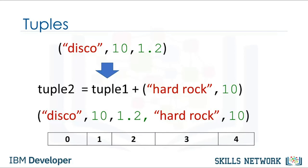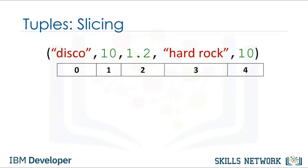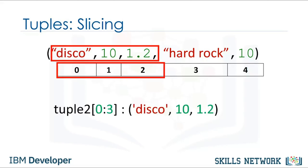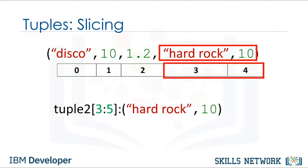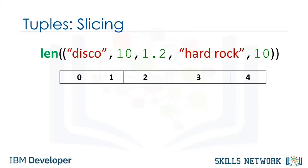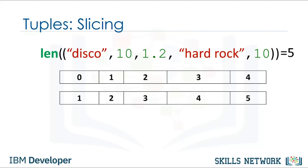We can concatenate or combine tuples by adding them. If we would like multiple elements from a tuple, we can also slice tuples. For example, if we want the first three elements, we use the following command — the last index is one larger than the index you want. Similarly, for the last two elements, notice how the last index is one larger than the length of the tuple. We can use the len command to obtain the length of a tuple. As there are five elements, the result is five.